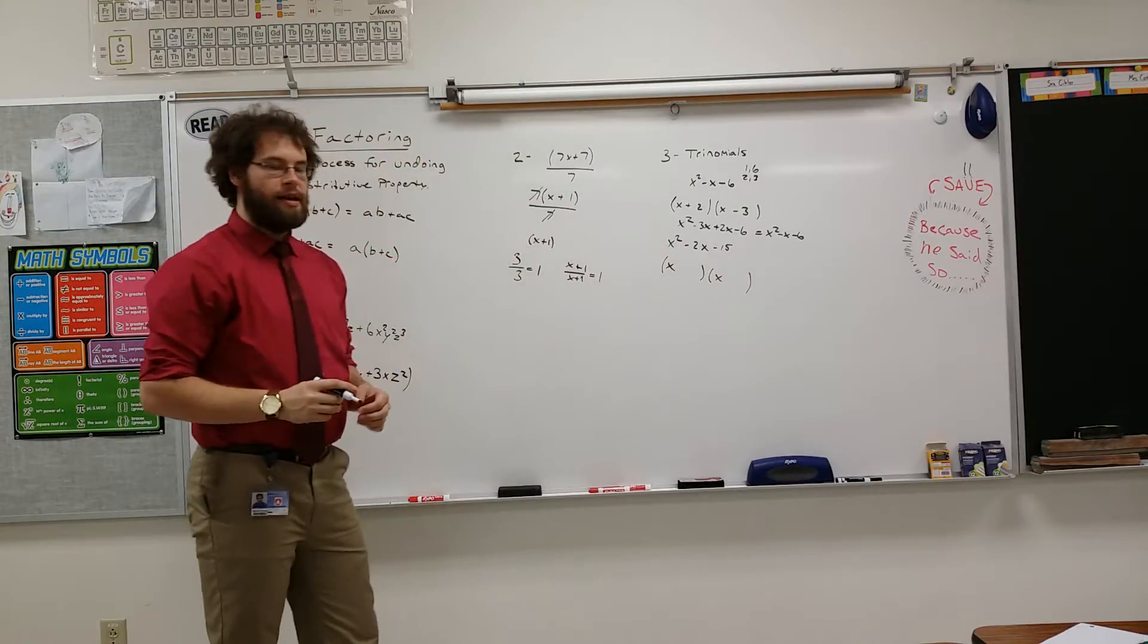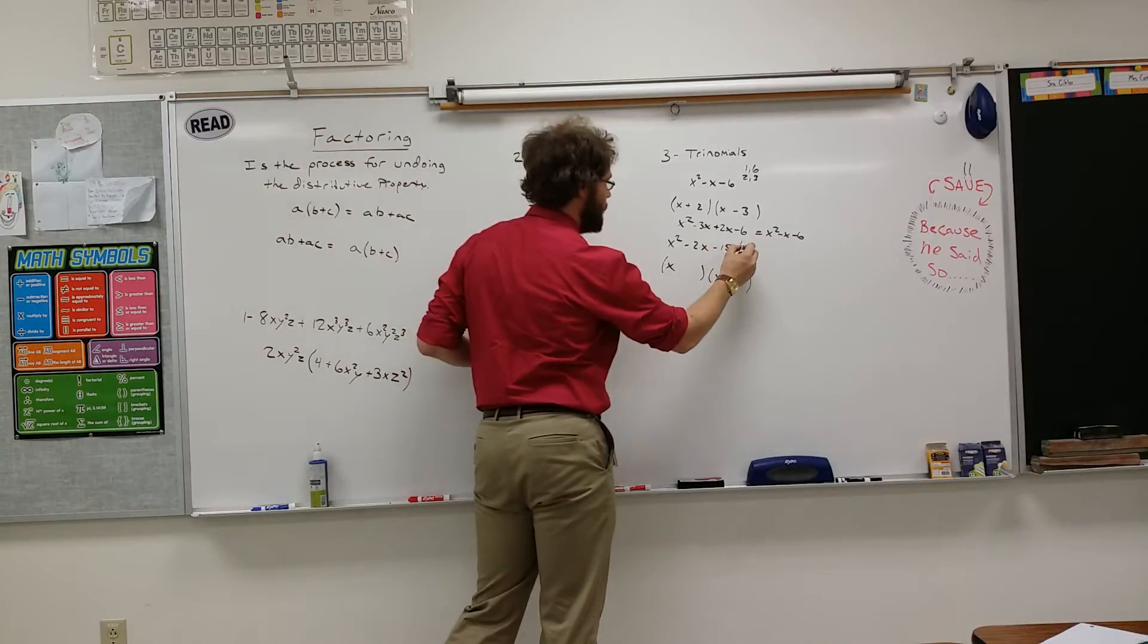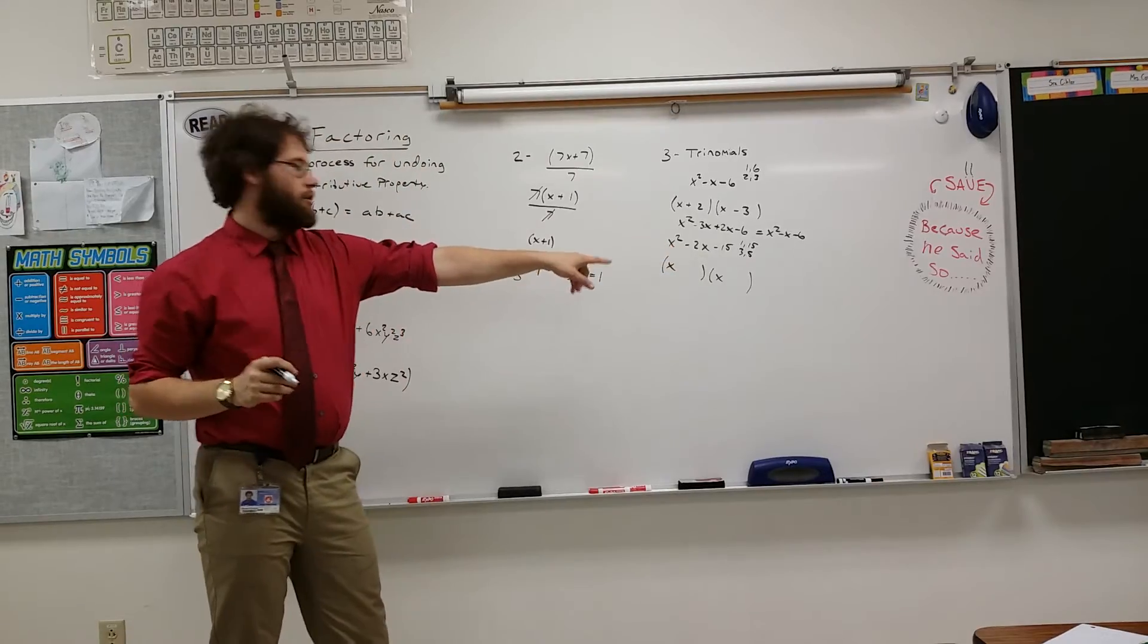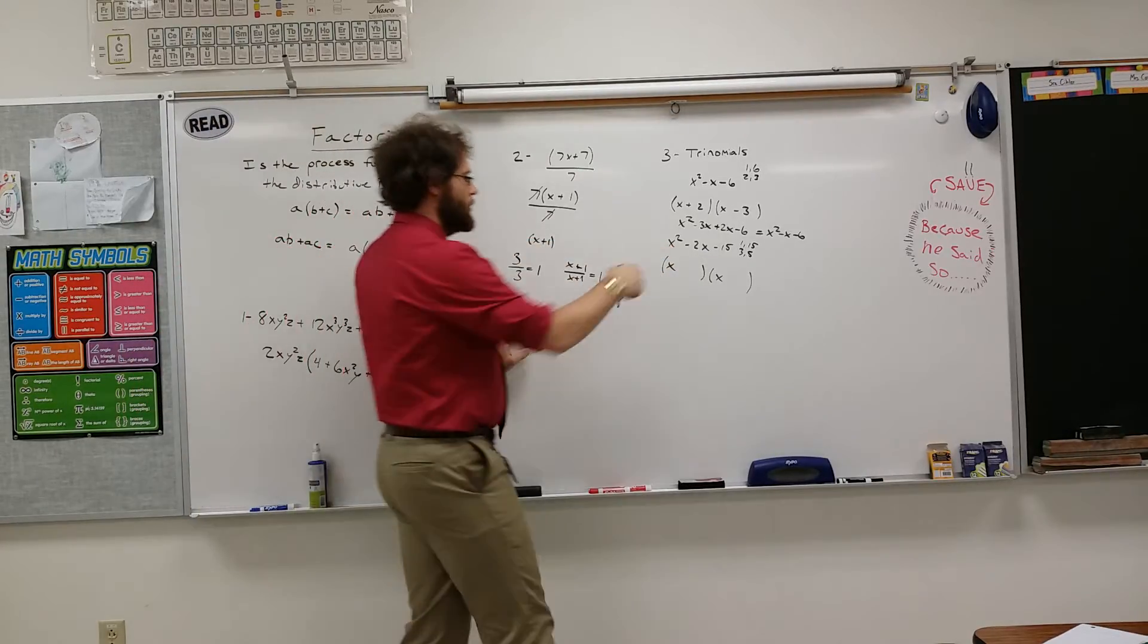So, I have my setup like this. I'm going to factor 15 really quick. I get 1 and 15, 3 and 5. 3 and 5 are obviously going to be the numbers that are going to get me to negative 2. So, I will do that.